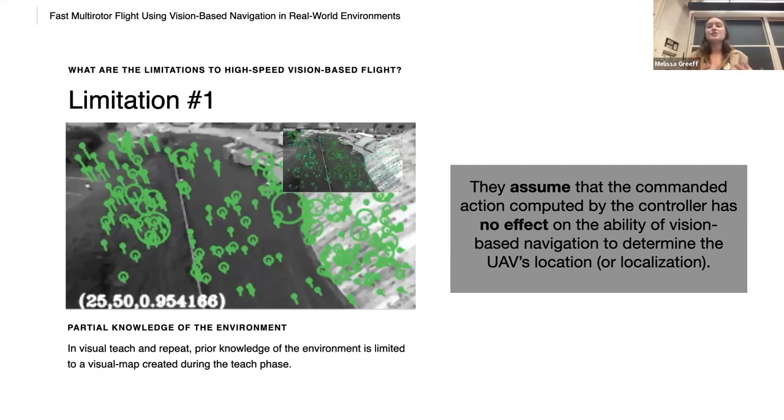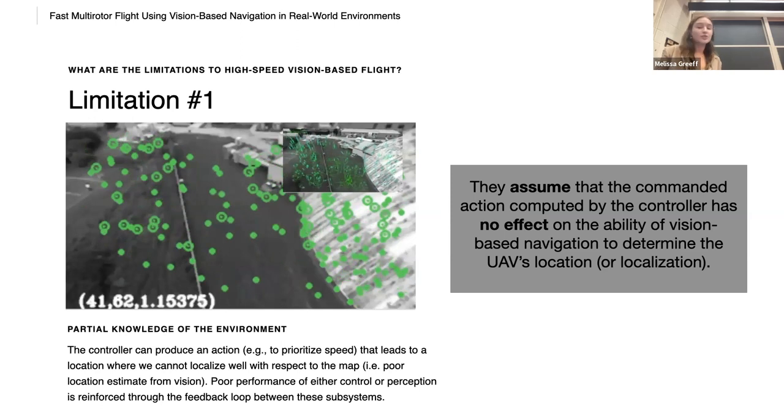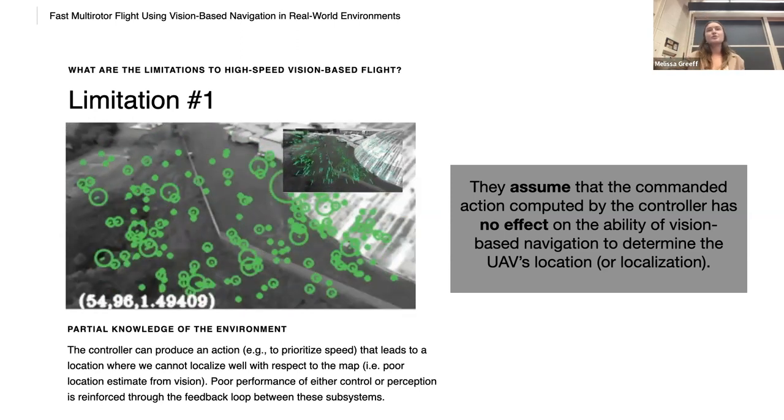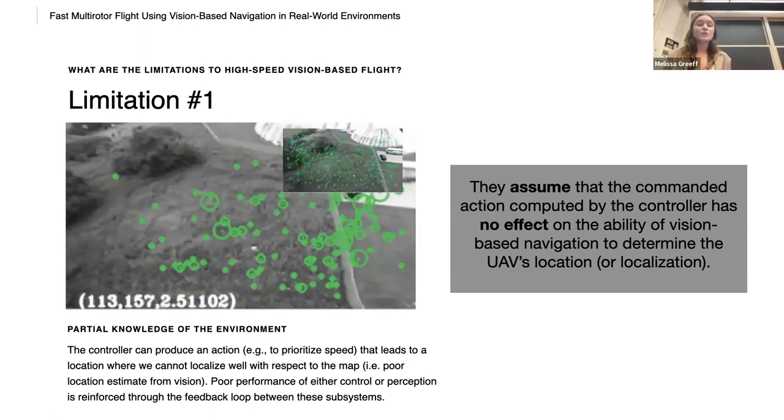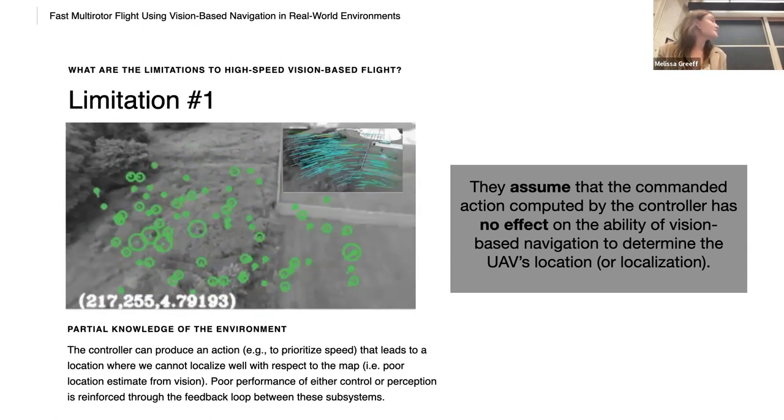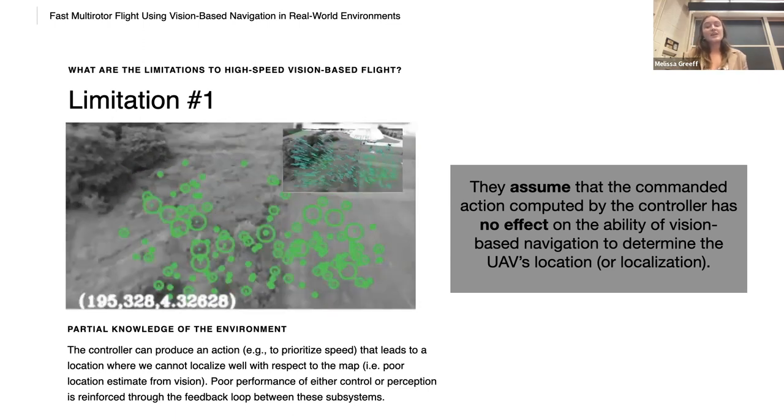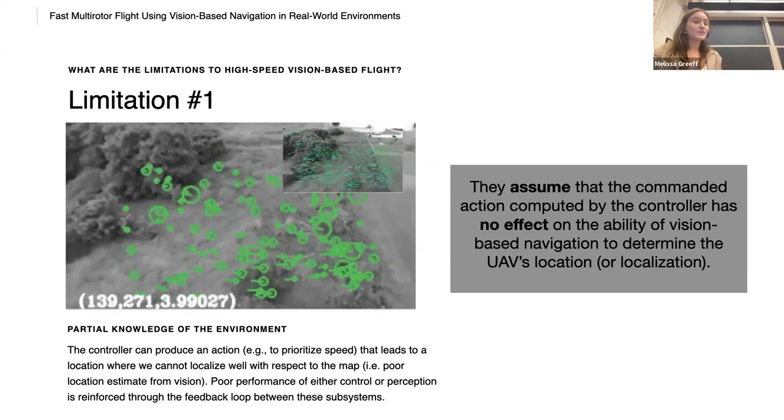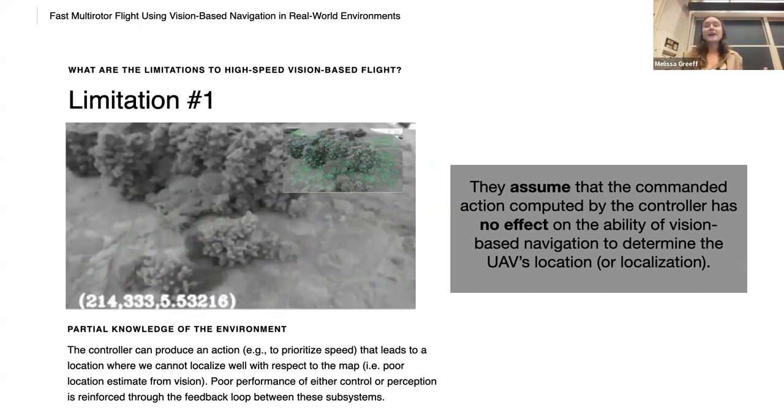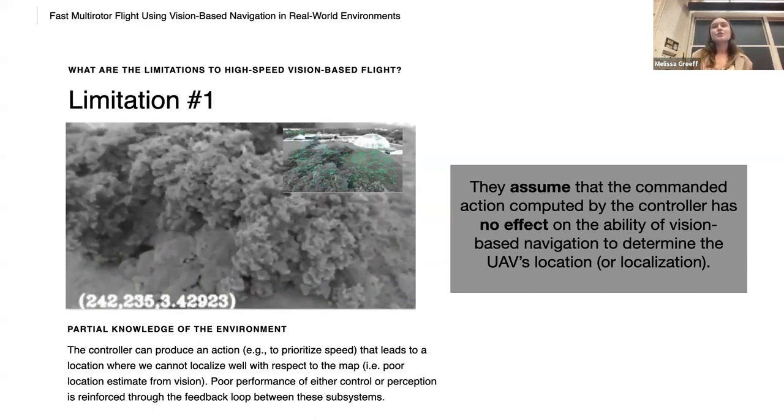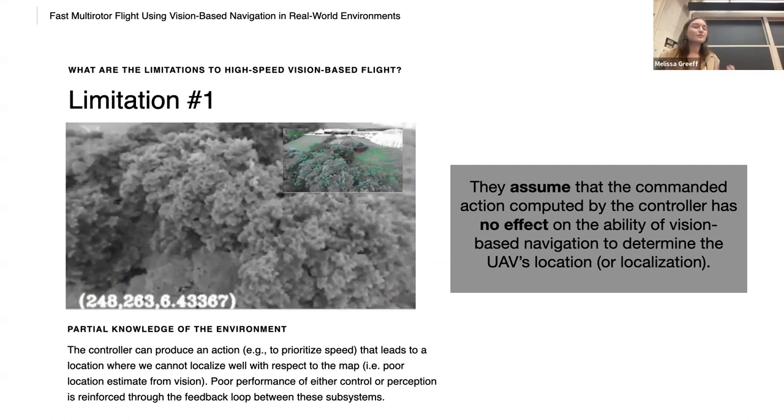So in our VT&R, partial knowledge of the environment is limited to a visual map created during TEACH. And so what can happen is that the controller can produce an action, for example, to prioritize speed, that leads to a location where we cannot localize well with respect to the map. And we see this in the video, is that we go to a location where the number of localization inliers, the green circles, is very low and then disappears. And in fact, poor performance of either the control or perception is simply reinforced through the feedback loop between these two subsystems.